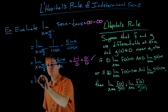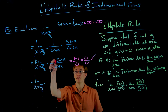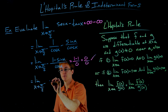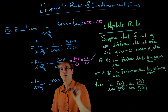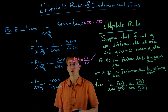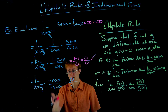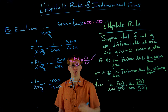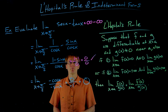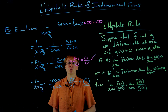According to L'Hôpital's rule, our limit is equivalent to the limit as x approaches π/2 from the left of the derivative of the numerator divided by the derivative of the denominator. The derivative of (1 minus sine x) is negative cosine x, and the derivative of cosine x is negative sine x. Cosine goes to 0 at π/2 and negative sine goes to negative 1, so we get 0 in the numerator. Therefore, the limit as x approaches π/2 from the left of secant x minus tangent x equals 0.